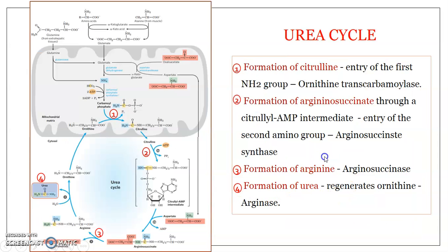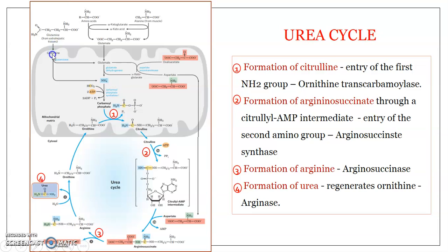The urea cycle is accomplished through four steps. The first step is the formation of citrulline. Alanine from muscle and other amino acids, along with glutamine from extra-hepatic tissues, are transported to the liver. These get converted to glutamate. Glutamine entering the mitochondria undergoes conversion to glutamate with the help of the enzyme glutaminase. Glutamate is thus produced through various sources.